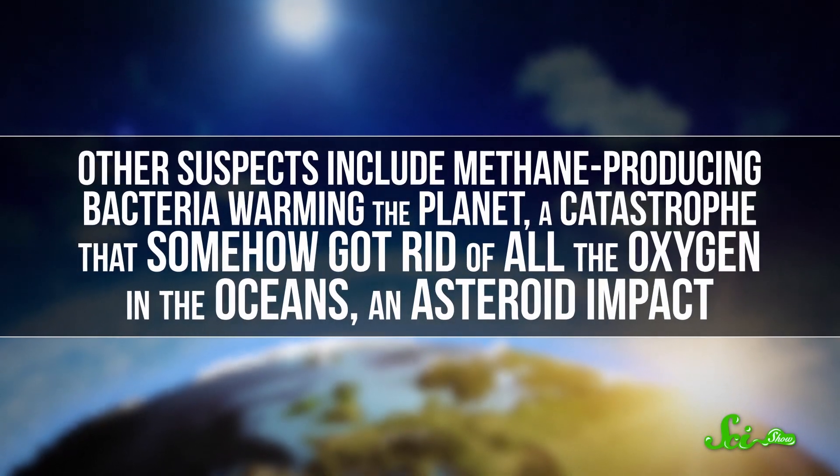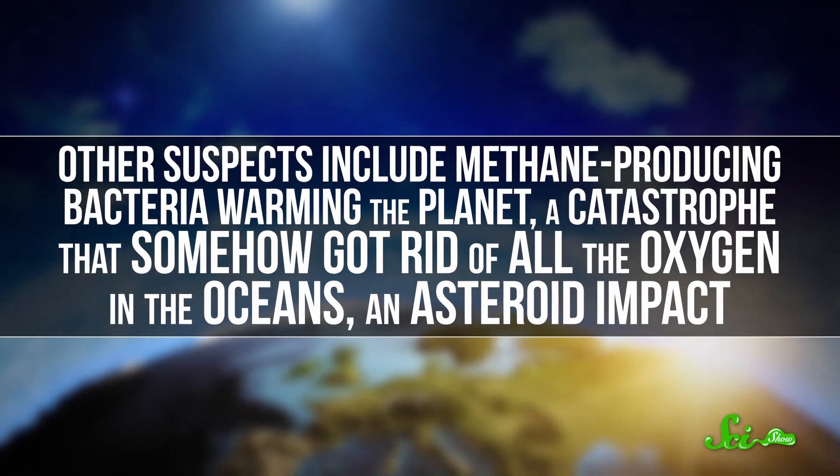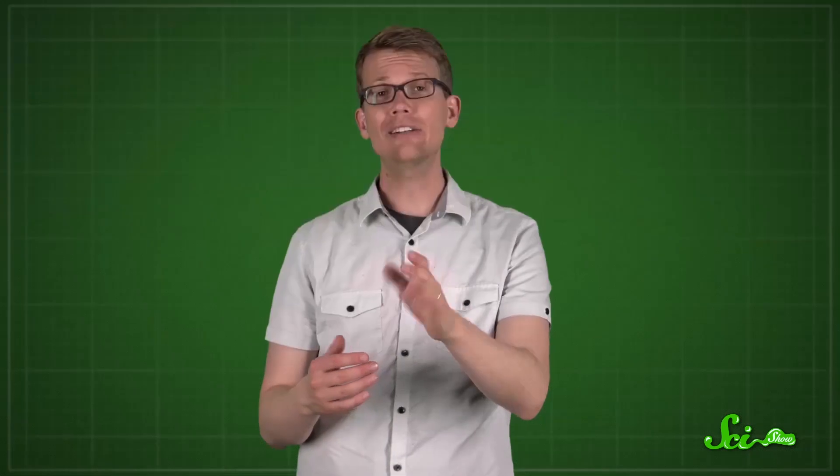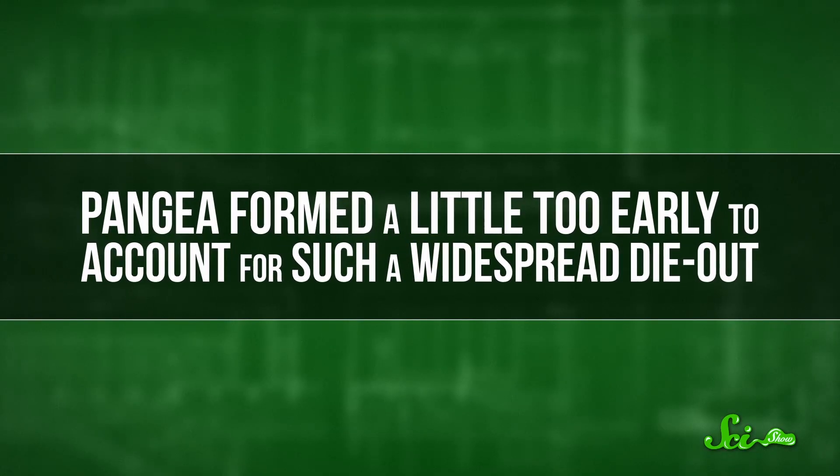Other suspects include methane-producing bacteria warming the planet, a catastrophe that somehow got rid of all the oxygen in the oceans, an asteroid impact. The Great Dying could also have been caused by the formation of the supercontinent Pangaea. Continents crashing into each other would have destroyed a lot of continental shelf habitat, killing some of the richest parts of the oceans. Having one big continent in one place would also have rearranged ocean currents and altered the climate. But Pangaea formed a little too early to account for such a widespread die-out. And all the other hypotheses have strengths and weaknesses, too. None of them can explain everything.